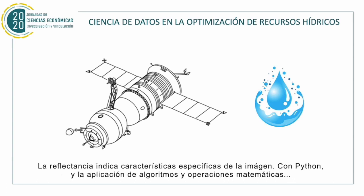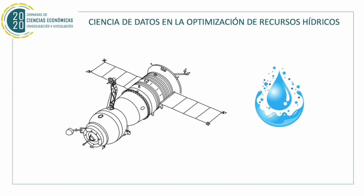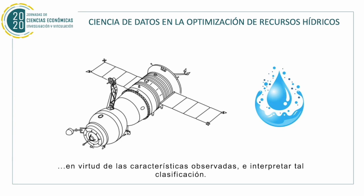The reflectance indicates specific characteristics of the images. With Python and algorithm application and mathematical operations, it is possible to classify those different pixels from the satellite images, from selected points in virtue of the observed characteristics, and perform such classification.